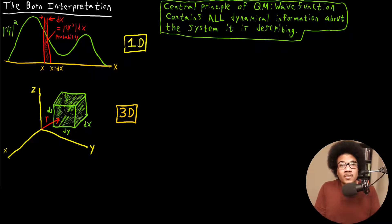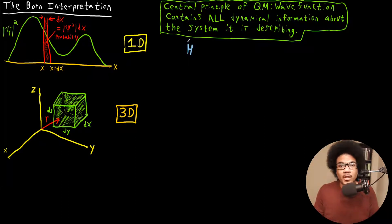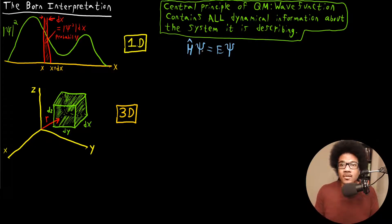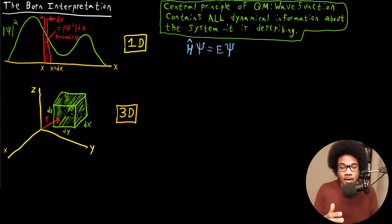In this video, we're going to discuss the Born interpretation of the wave function. In the previous videos, we've been talking about the wave function as a piece of Schrödinger's wave equation — H psi equals E psi. And that psi is the wave function. So you would set up a Hamiltonian for a system, you would get some solutions in the form of these wave functions, and they would tell you something about the system. In fact, they're a central pillar of quantum mechanics.